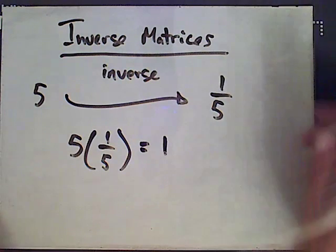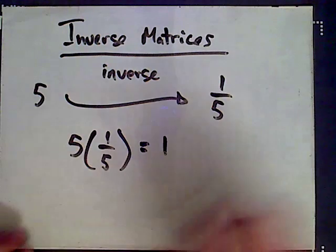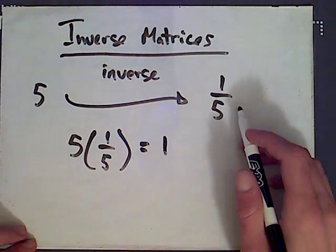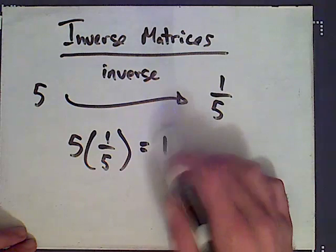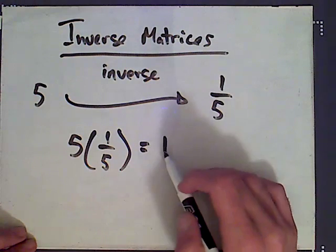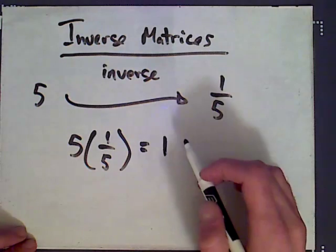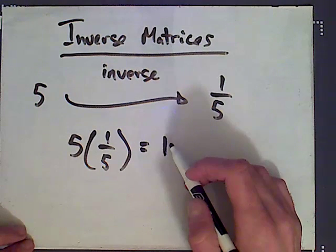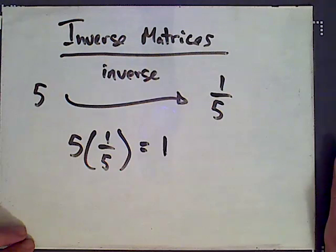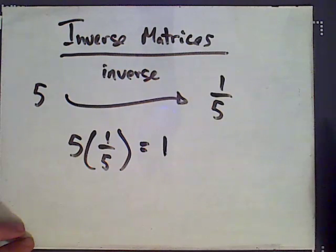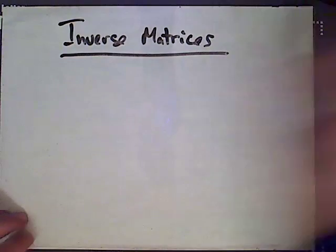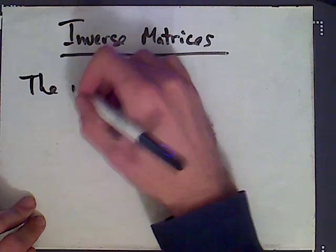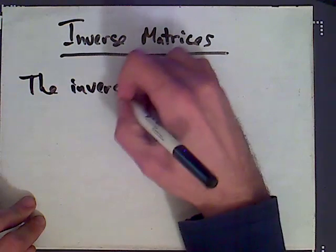In the matrix world there's also the notion of an inverse. The corresponding idea in the matrix world—what corresponds to 1—is the identity matrix, because 1 times any number is that number, and the identity matrix times any matrix is that matrix. So let me give the definition.